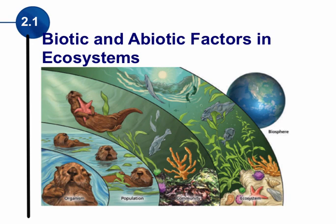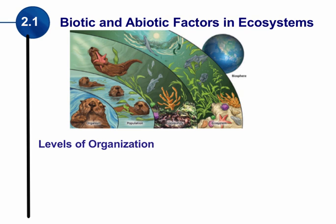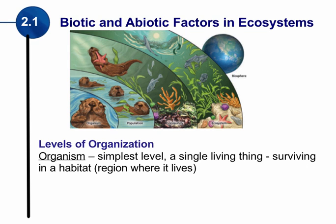Let's now look at biotic and abiotic factors in an ecosystem. When we are studying ecosystems, we are going to concern ourselves with the different levels of organization. We're going to use this picture to explain these different levels. The first level is if we just have one single living thing — the simplest single living thing, called an organism.